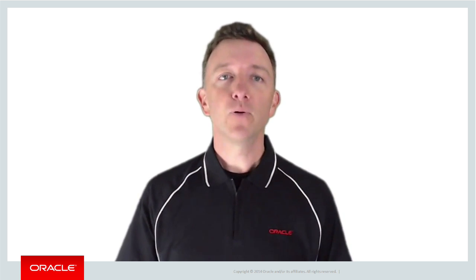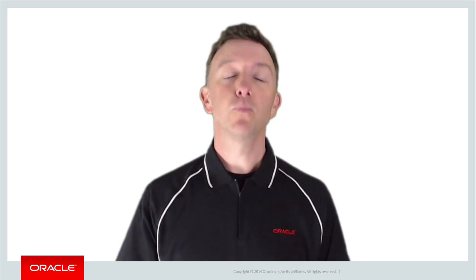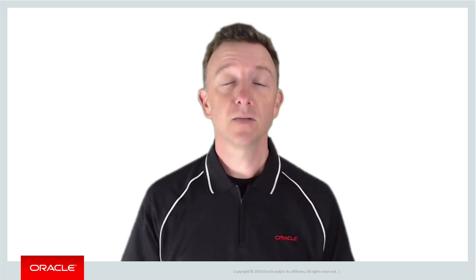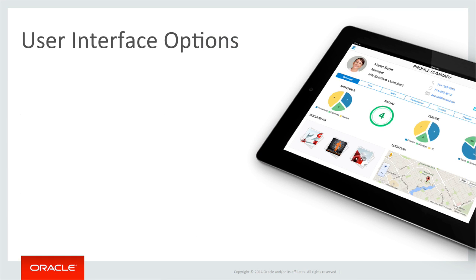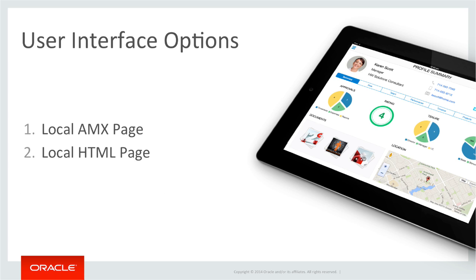In previous episodes we covered how, broadly speaking, MAF supports three different types of user interfaces: local AMX Pages that run inside the mobile device, local HTML pages that are also deployed and run on the device, or thirdly, remote web pages to the device, commonly referred to as remote URLs.